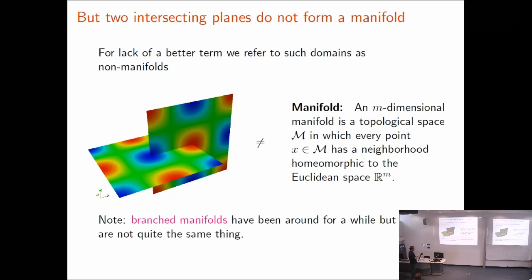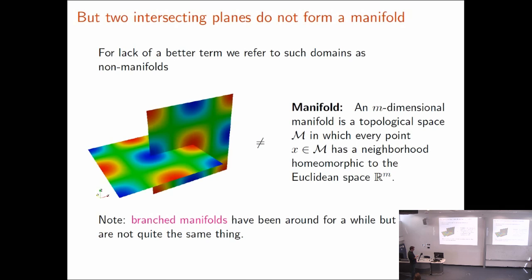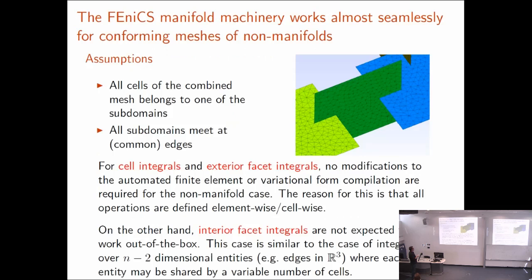For lack of a better term, I'm calling all of these things non-manifolds, even though that's kind of a terrible term. It's meant to imply that as far as FEniCS is concerned, it might as well be a manifold. Maybe I should have called it that — it's better than non-manifold.